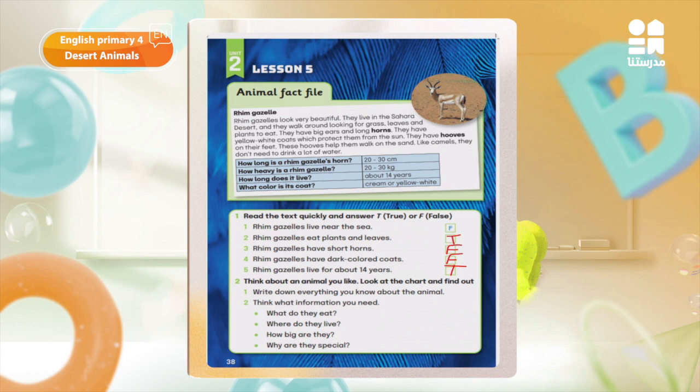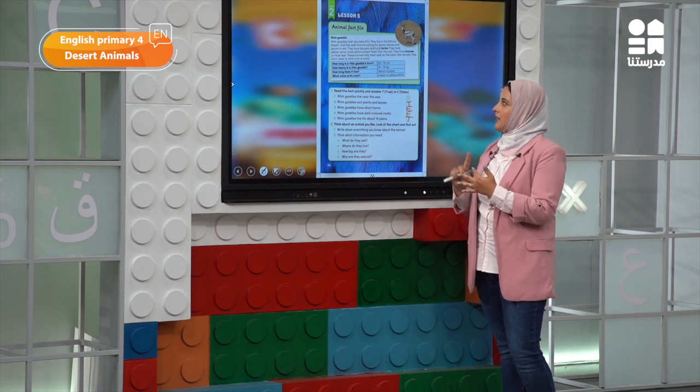Now think about an animal you like. Look at the chart and find out — for example, fennec fox, step eagle, or rim gazelle. You can write about an animal that you already know.